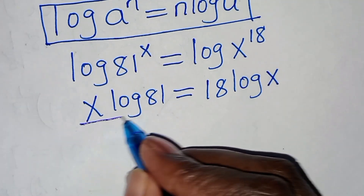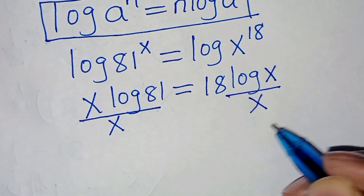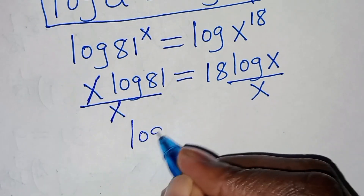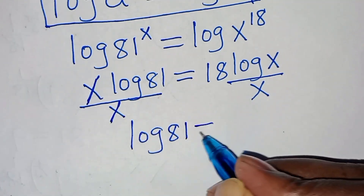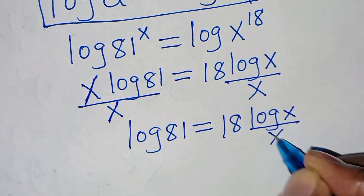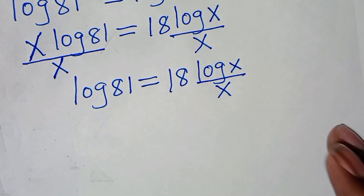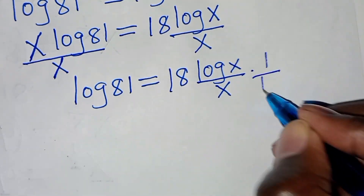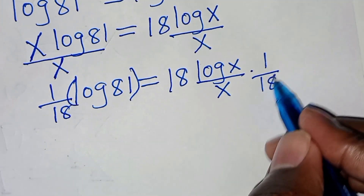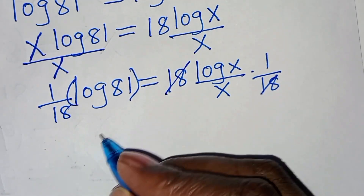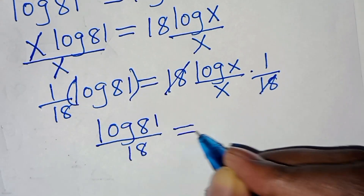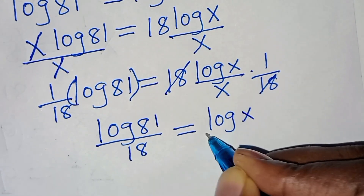The next step is to divide both sides by x, so x and x simplify. This implies we have log 81 equals 18 log x divided by x. Then let's multiply both sides by 1 over 18, so 18 simplifies. This implies we have log 81 over 18, which is equal to log x over x.